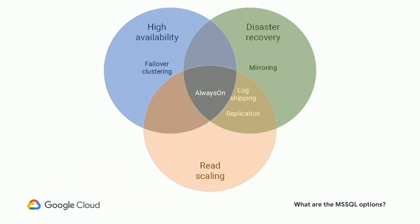For high availability, one of the options you might consider is failover clustering. It's a much older technology, much more widely known, and especially if you already have existing SAN infrastructure, it might be a good option for you, at least on-prem. For disaster recovery, you might have thought about using SQL mirroring, although Microsoft are deprecating that in favor of the basic availability group. Log shipping is probably a better option if you're just doing disaster recovery. It's a lot more simple to set up, with very few requirements — essentially just a few SQL jobs that run on nodes to backup databases in one instance and restore them on another.